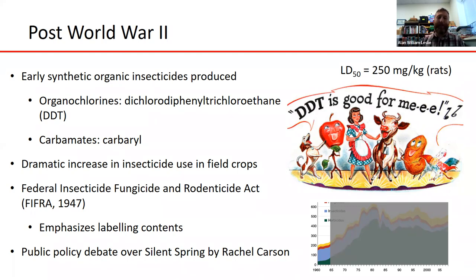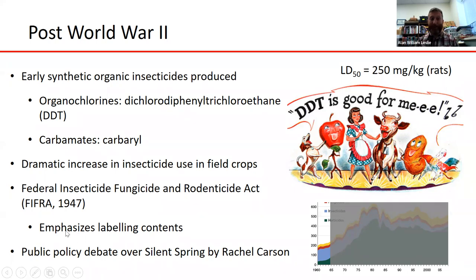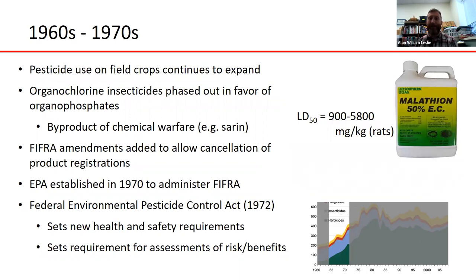During this period, the Federal Insecticide, Fungicide, and Rodenticide Act — FIFRA — was passed, setting the foundation for the federal government to regulate the sale and use of pesticides broadly. Early on it focused mainly on labeling contents. Also during this period, Silent Spring by Rachel Carson sparked major public policy debate over the overall safety of insecticides and other pesticides as their use increased across larger acreages through the 60s and 70s.